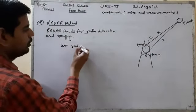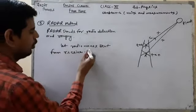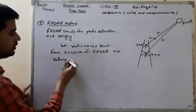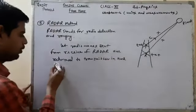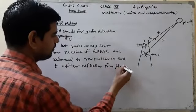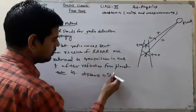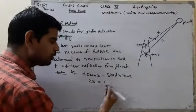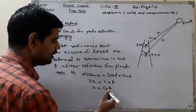Radio waves sent from the receiver of radar are returned to the transmitter in time t after reflection from the planet. Then distance equals speed into time, so distance traveled will be x plus x, which means 2x. As we know, radio waves move with the speed of light, and time taken is t. So the distance of the planet from earth is c into t divided by 2.